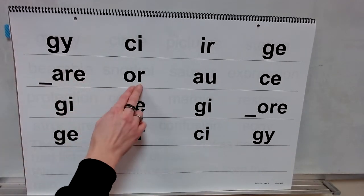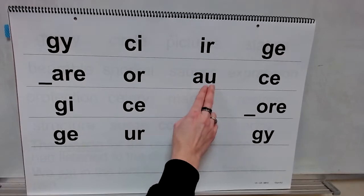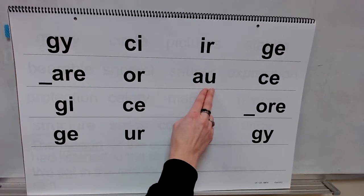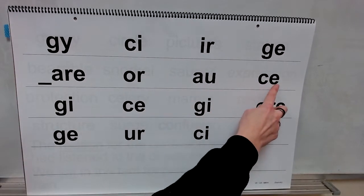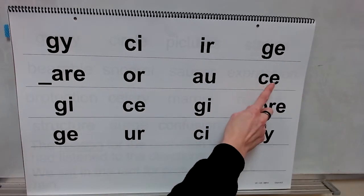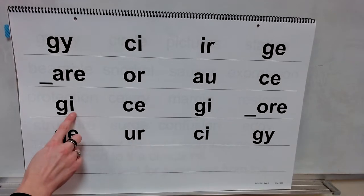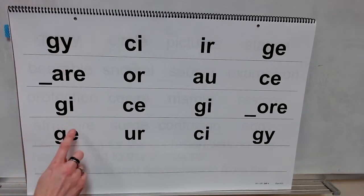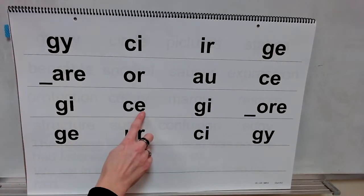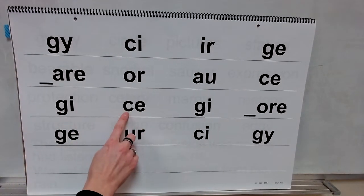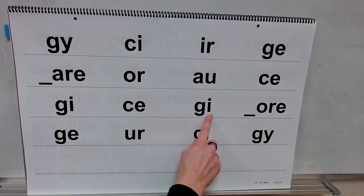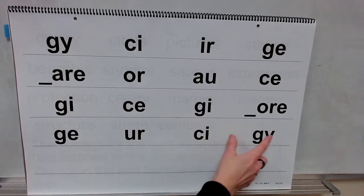Sound: air. Sound: or. Sound: ah. With an E here. Sound: S. With an I here. Sound: J. With an E. Sound: S. Followed by an I. Sound: J.